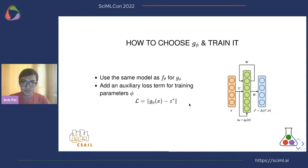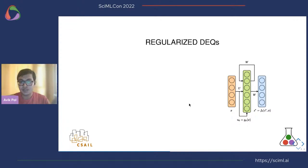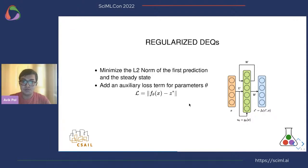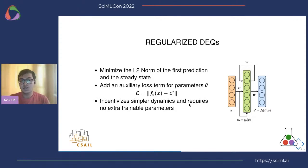We also explored another idea. Introducing G of phi adds extra parameters, and since our pitch is around low memory requirements, it's not ideal. It turns out that instead of using G of phi, if we perform one iteration of F of theta and say that the first iteration needs to be as close as possible to the steady-state solution, this incentivizes the model to learn simpler dynamics. In most cases, even this outperforms skip DEQ, and we call it skip DEQ version two.